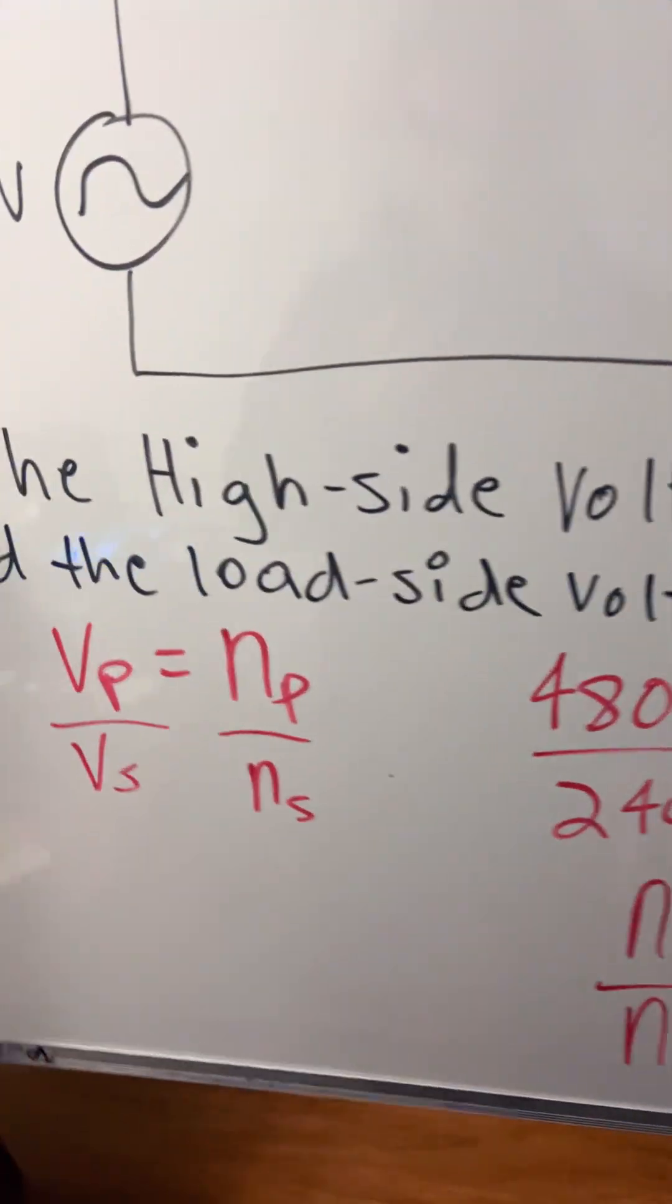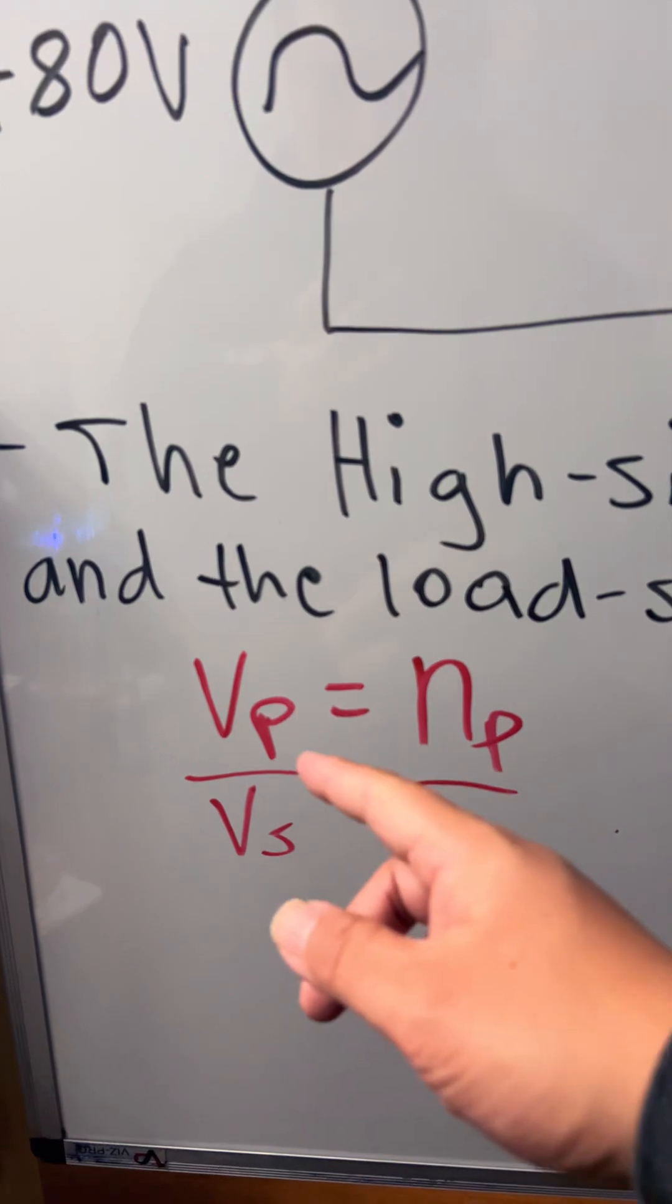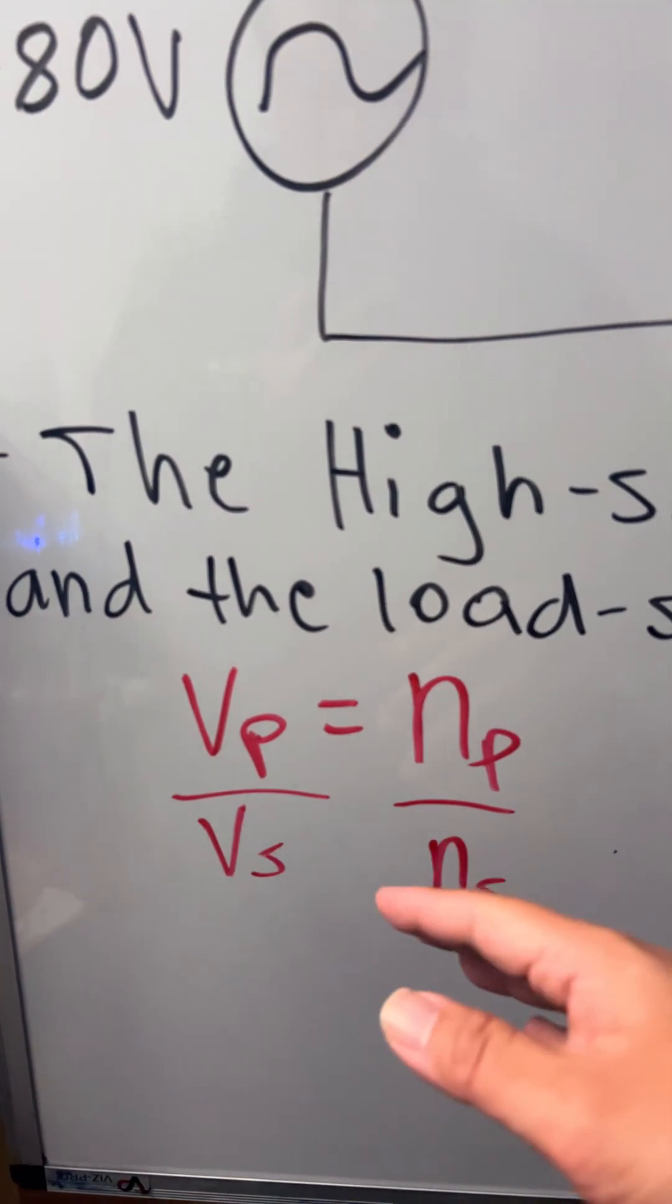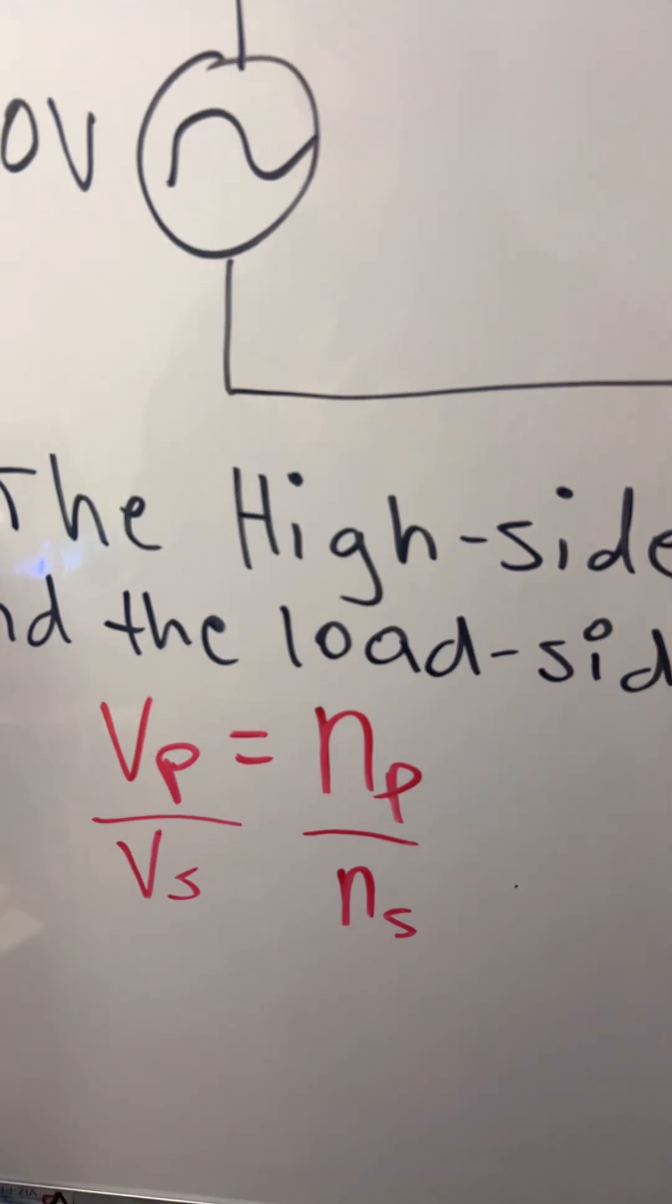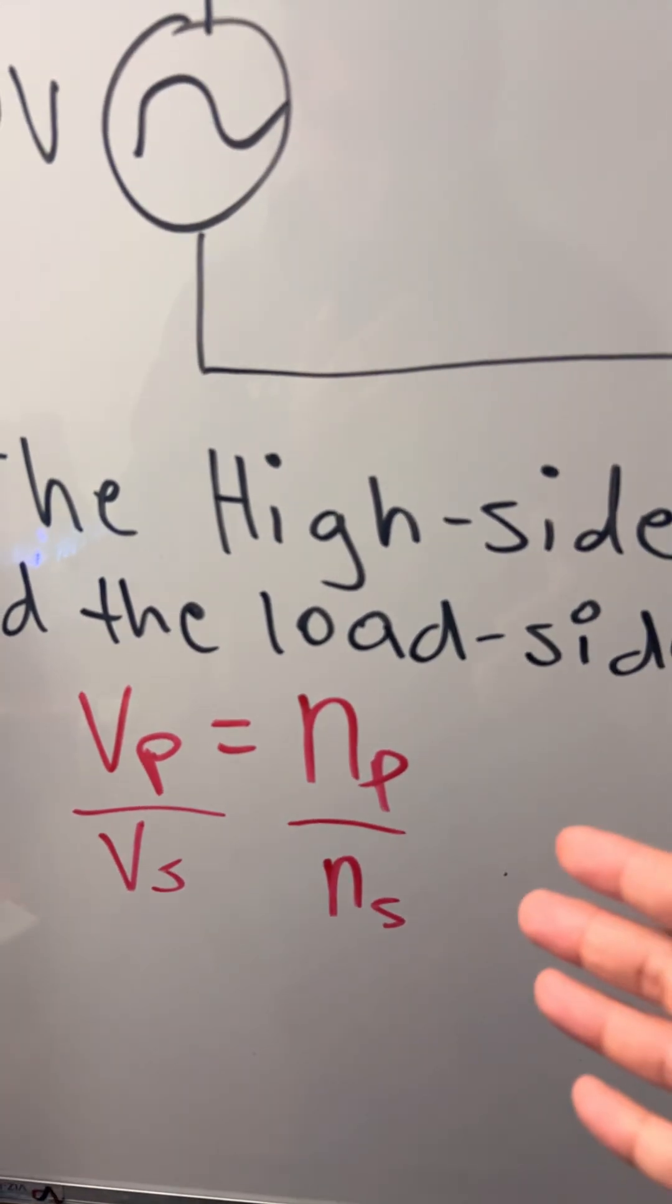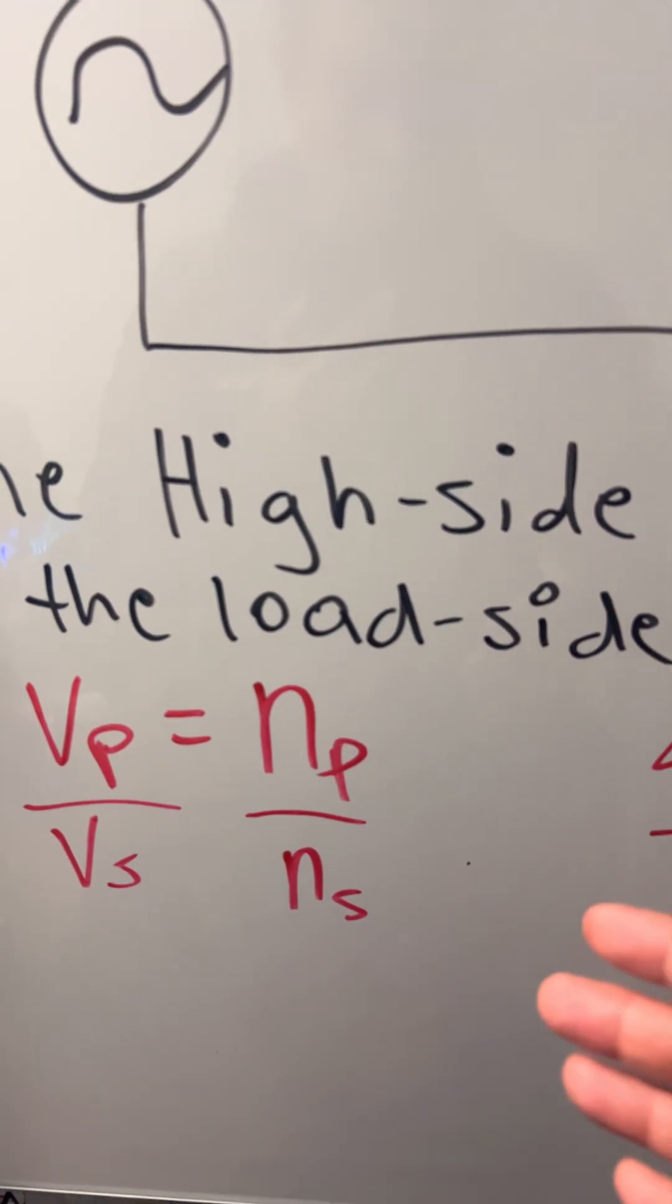For the transformer formula, we have the primary voltage divided by the secondary voltage. This will give us the primary number of turns divided by the secondary number of turns.